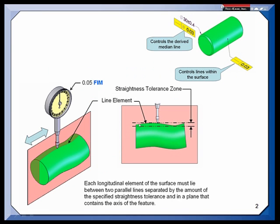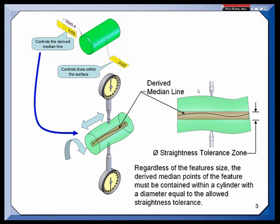Surface straightness, as we see called out here associated with the surface, gives us a tolerance zone that is two parallel lines. If I associate with the size dimension on a cylindrical feature like this, then the tolerance zone is cylindrical. Here you can see this can be kind of a corkscrew. These derived median points create a derived median line down through the part.